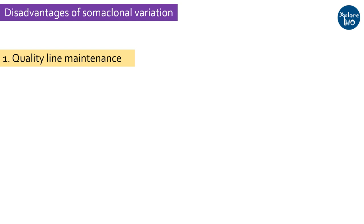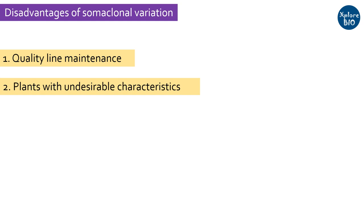Now let's talk about the disadvantages of somaclonal variation. Variations occurring during clonal propagation through tissue culture is a major bottleneck in the production of clones of elite cultivars where maintaining clonal fidelity is very important. It may result in production of plants with undesirable characteristics, and the somaclonal variants may not be genetically stable — with time or in their next generation, their characters might change due to this instability.